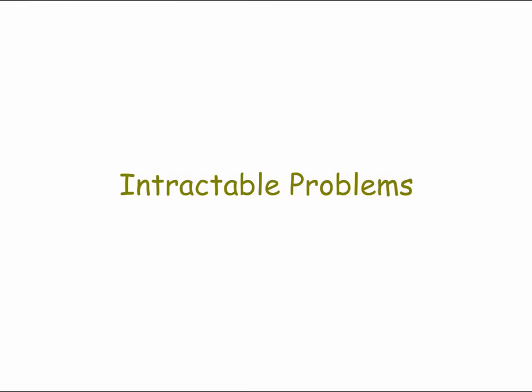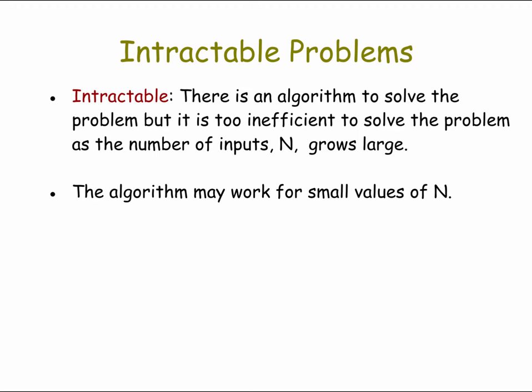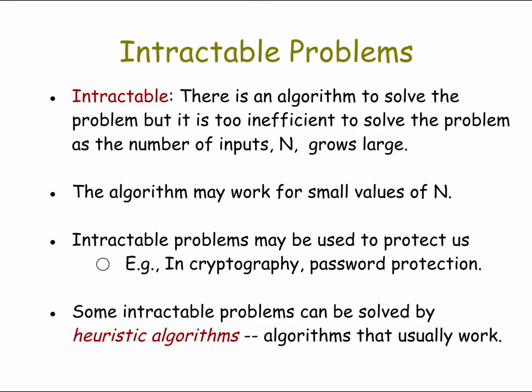Let's now talk about intractable problems. A problem is intractable if there's an algorithm to solve it, but the algorithm is too inefficient as the number of inputs grows large. We can solve intractable problems for small input sizes, but not in general for large input sizes. We can use this fact to protect us — for example, protecting our passwords. Also, for certain intractable problems, we can sometimes find heuristic algorithms.